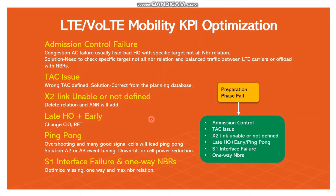For tech issue, if the tech is wrong, we have to correct it as per the planning database. Next is X2 link enable or not defined — if there are X2 link failures, we have to delete the neighbor relation and ANR will automatically add it back. For late handover or early handover, we have to find it from the report and change the cell individual offset (CIO) value accordingly.